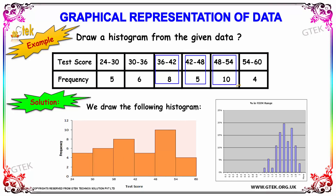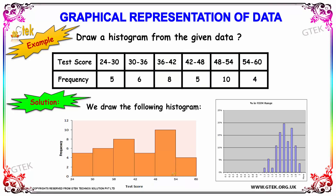From 48 to 54, the frequency is 10, so we have indicated that. And finally, 54 to 60 it's 4, indicated accordingly. This is how we draw the histogram graph.